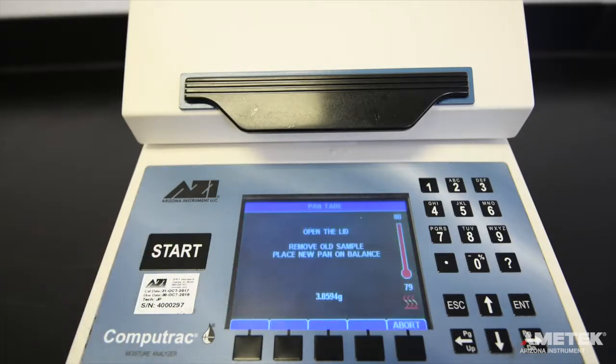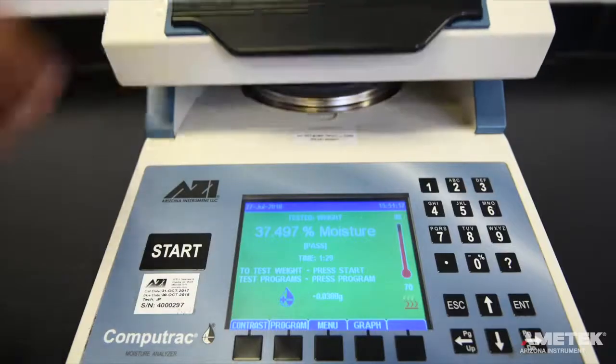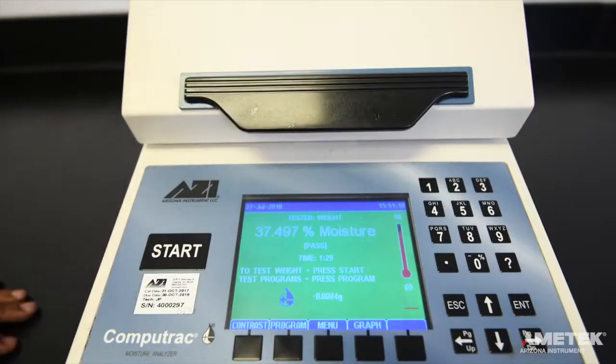The instrument will prompt you to remove the old pan and place a new pan on the pan support. If the existing pan is clean, for example, if it was just used to perform the span calibration, it can be used again. Simply remove it momentarily, then place it back on the pan support before closing the lid.